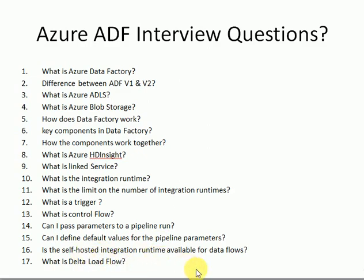Is a self-hosted Integration Runtime available for data flows? Data Flow is a wizard-based feature for copying data from source to target, but you cannot use Data Flow directly for on-premises to cloud. Data Flow works cloud-to-cloud only. For on-premises data, you first need to load it to a cloud staging area using a Copy Activity — Copy Activity can be used with any Integration Runtime.